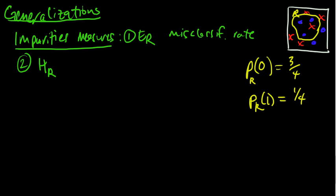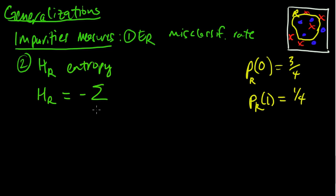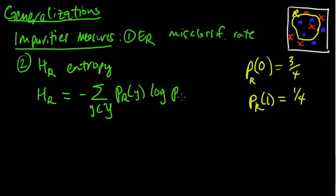Another option here, instead of using the misclassification rate, we could use the entropy of this distribution, which is the sum over classes y — some finite set of classes, since these are generalizations for classification — and we have the empirical distribution times the log, and it's minus this quantity, which makes the entropy positive. So instead of using the misclassification rate, you could use the entropy.